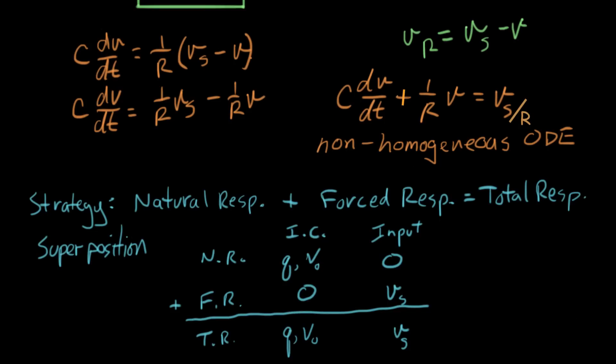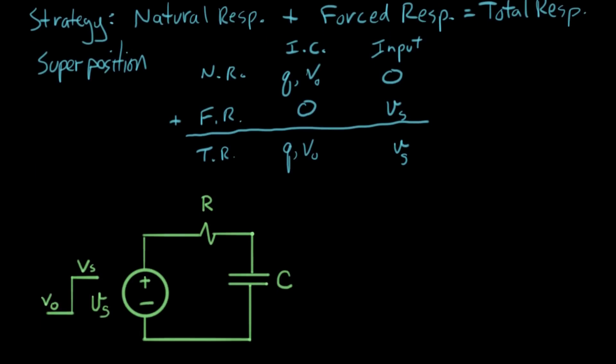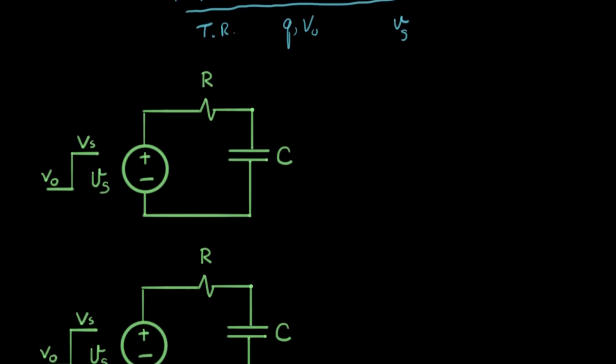In the last video on step response, we set up the differential equation that describes our circuit, and we found that it was a non-homogeneous equation. Now we're going to follow through on the strategy of solving it with a forced response plus a natural response.